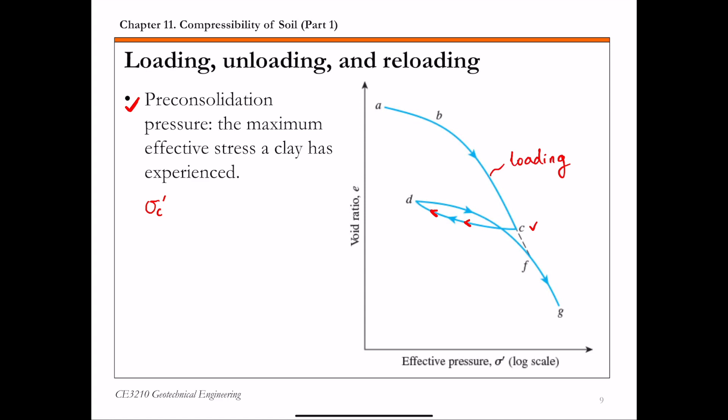And then after point D, you reload the clay. So during this reloading process, initially the slope of this reloading portion is similar to the unloading. So it has a much shallower slope until it passes point C. So point C now by definition is the maximum effective stress a clay has experienced. So that's roughly your preconsolidation pressure.